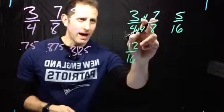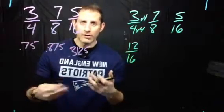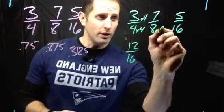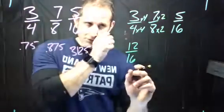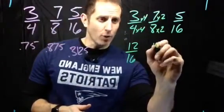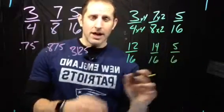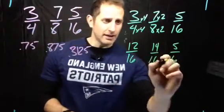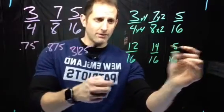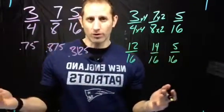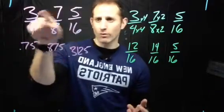And if we do the same thing for seven-eighths: what can I multiply eight by to get sixteen? Eight times two is sixteen. Doing the same to the top: seven times two is fourteen, so seven-eighths equals fourteen-sixteenths. I bring down five-sixteenths as-is. Now I can compare these much more easily — five-sixteenths has the fewest pieces, then twelve-sixteenths, then fourteen-sixteenths. Putting them in order from least to greatest: five-sixteenths, three-quarters, seven-eighths — the same result we got with the first strategy.